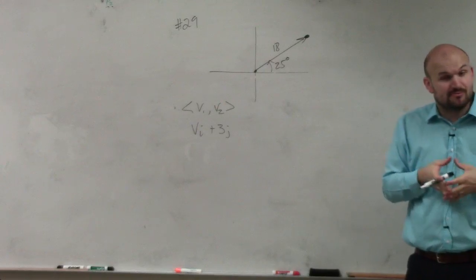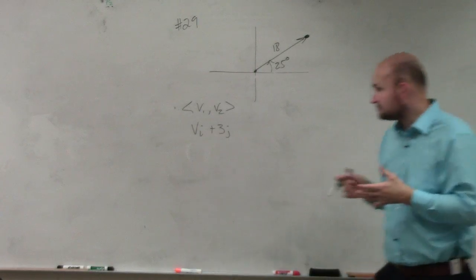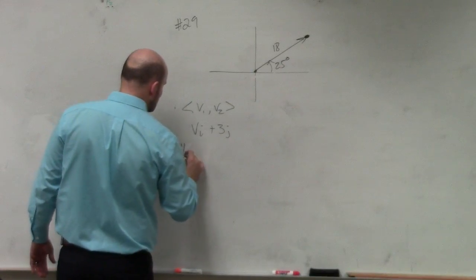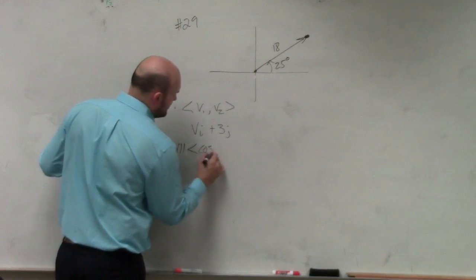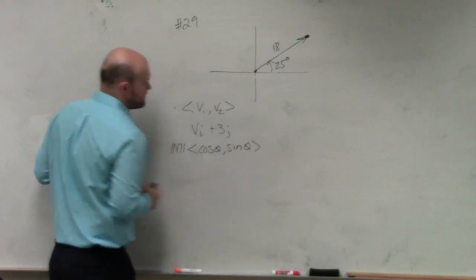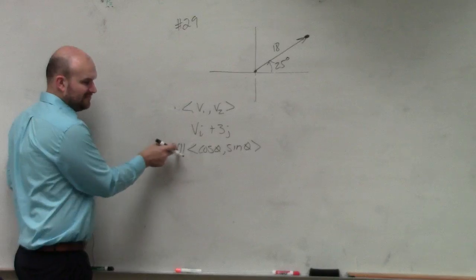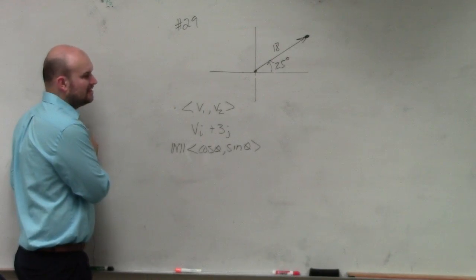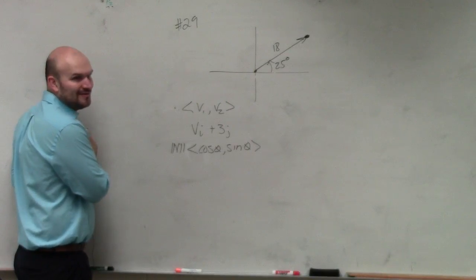So the third portion that we learned was you could use it by multiplying its magnitude times the general form of a unit vector: cosine theta, sine theta. Well, v represents magnitude. Do we know the magnitude of our vector? Yes. Theta is our angle. Do we know the angle of our vector? Yes.